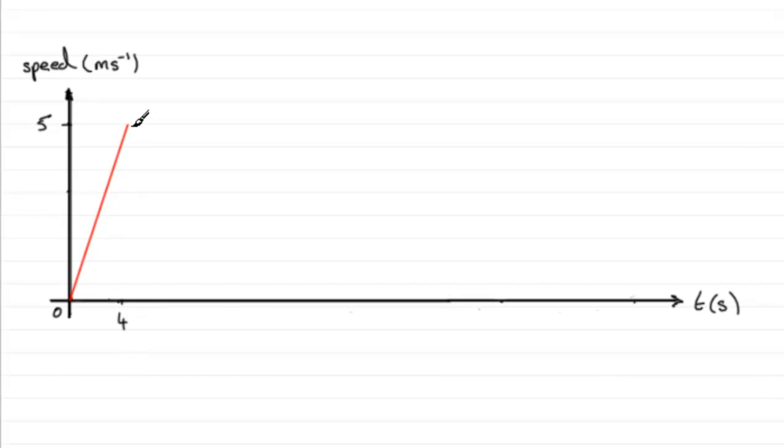When she reaches this speed of 5 meters per second, she then goes at a constant speed for a further 60 seconds. A further 60 seconds is going to take us to 64, and it should be a horizontal line through here. When we get to here, this will be 64 seconds.